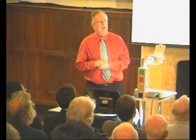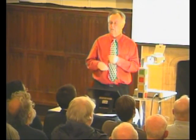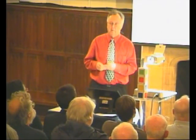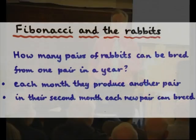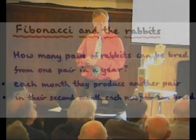You've got a pair of rabbits, and this pair of rabbits produces, regularly on the first of every month, another pair of rabbits. Then after one month, the new pair of rabbits becomes fertile and they start breeding as well. And so you want to know, after a year, how many pairs of rabbits are there?